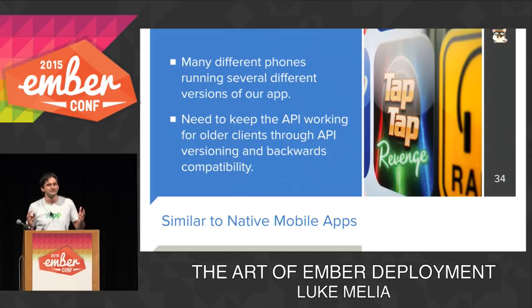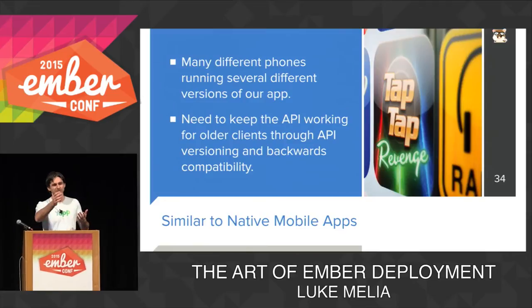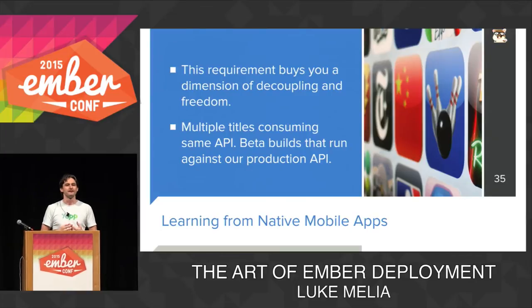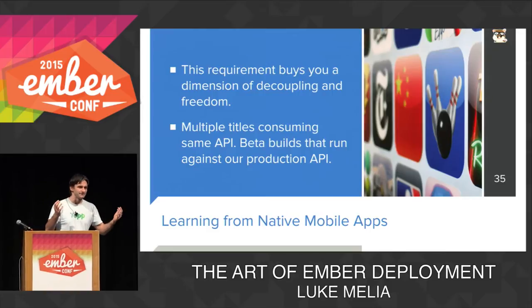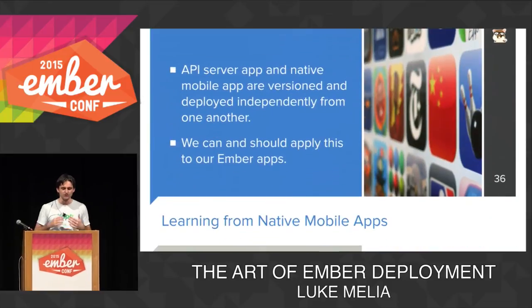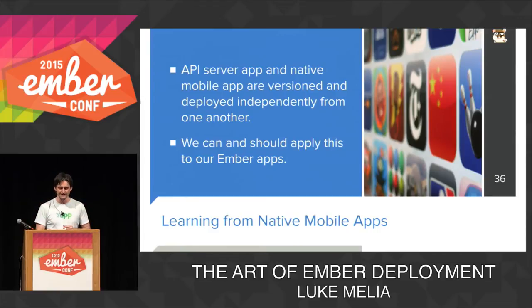You would never consider trying to time your API change release with when your app gets approved by Apple or gets through the Android submission process — that would be pretty silly. We can learn from native apps that this requirement buys a certain amount of freedom and decoupling. For example, you might have multiple apps in the app store talking to a single API, or beta builds running against your production API. We can and should do the same for our Ember apps, assuming we're versioning and deploying them independently.